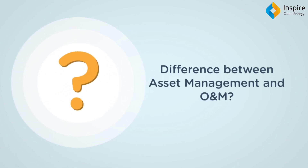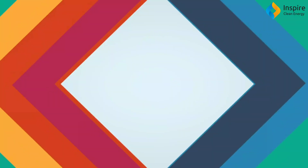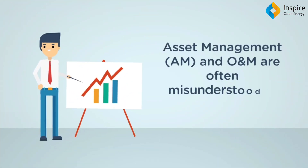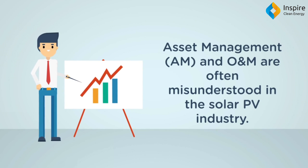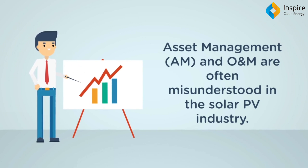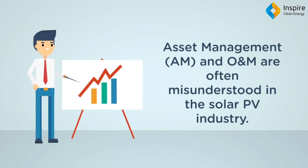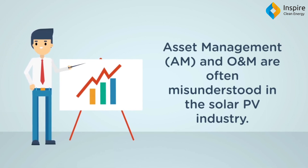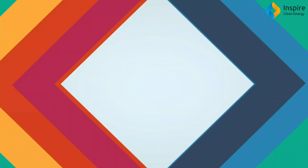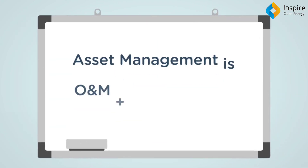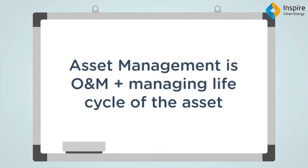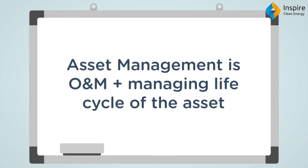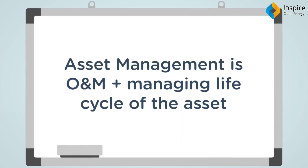In this video we are going to see the difference between asset management and operations management. Asset management and operations and maintenance are two main topics in the solar industry. O&M is an integral activity of asset management, and many of us are not aware of the difference between the two. The exact definition of each is blurred, but for the long-term operation of renewable energy facilities, we should know the importance of asset management.